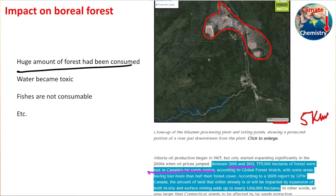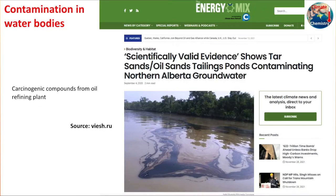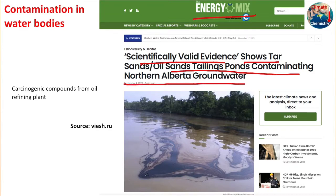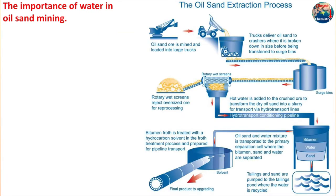A huge amount of boreal forest has been consumed because of oil production. The water has become toxic and fish are not consumable. One report from Energy Mix shows scientifically valid evidence that tar sand or oil sand tailing ponds are contaminating northern Alberta's groundwater. Because of this industrial activity, groundwater is getting contaminated as carcinogenic compounds from oil refinery plants are mixing into the water.